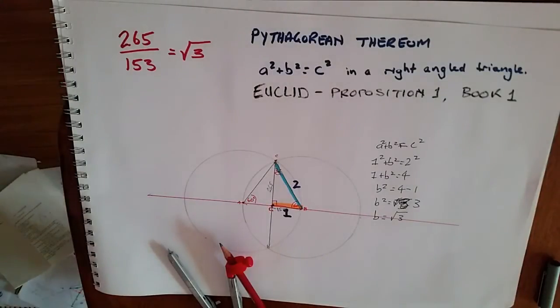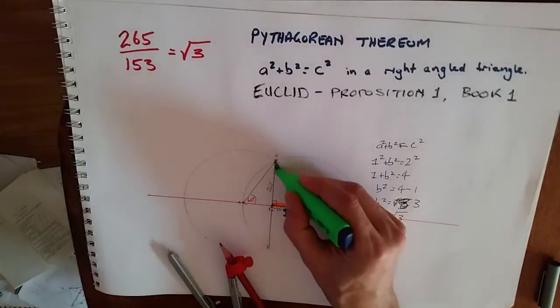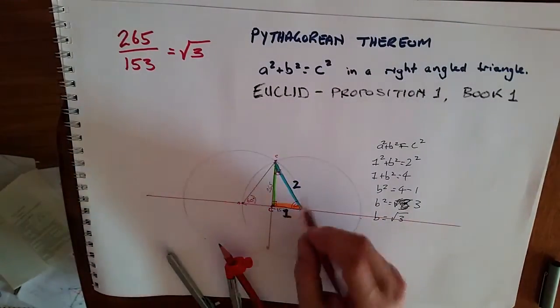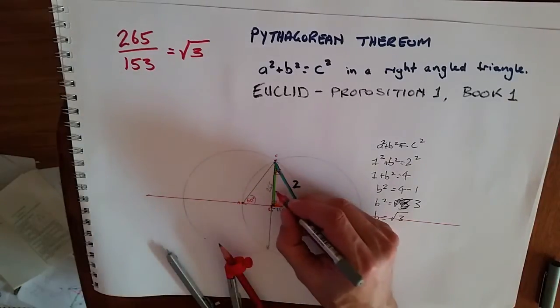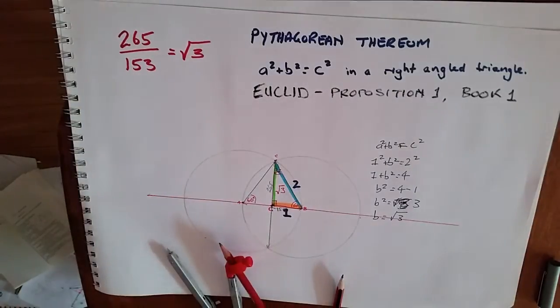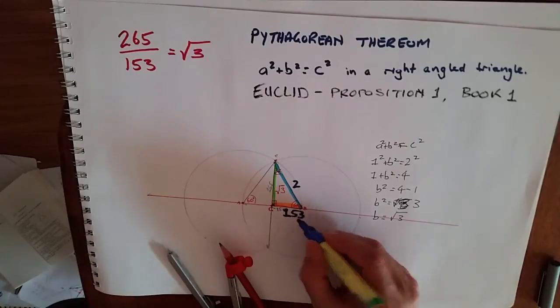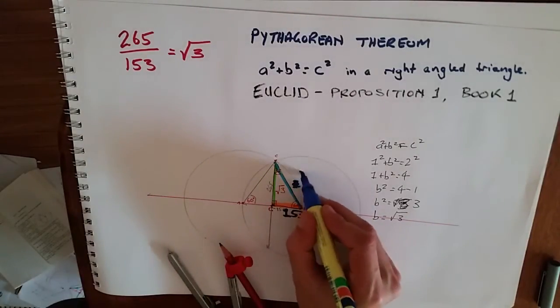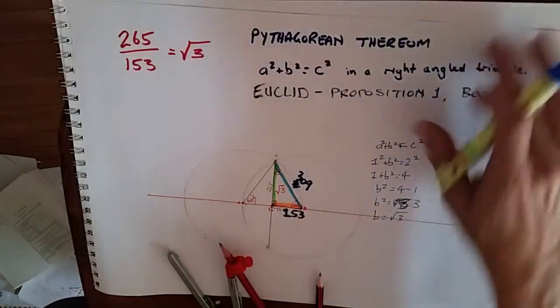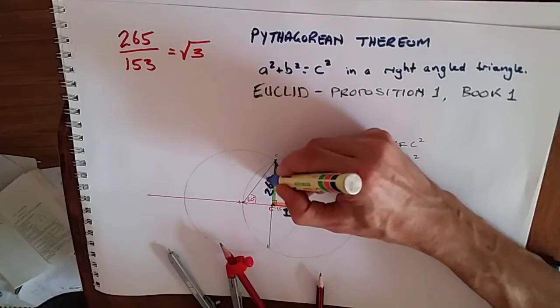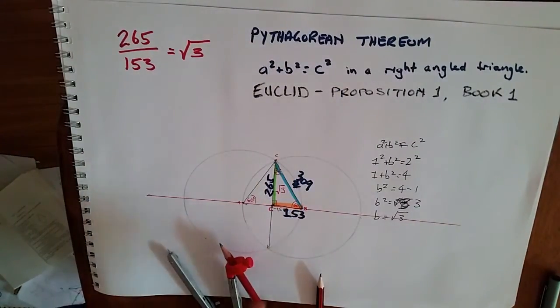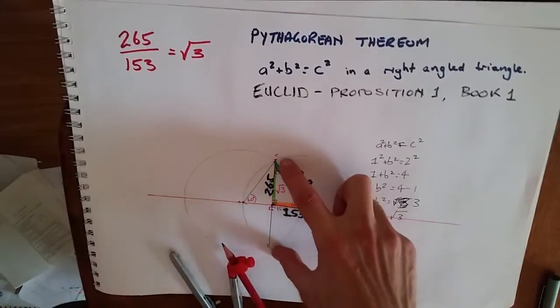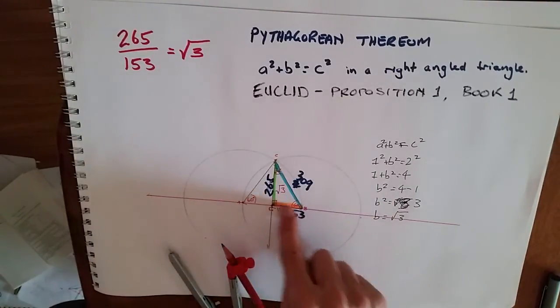So that means that this green section is the square root of three. Now, one to two, we can substitute. You can check it in your own calculator to be sure. That would be 153, the orange section. This would be 309, and this would be 265. So the vesica piscis is ratioed at the square root of three: 265 by 153.